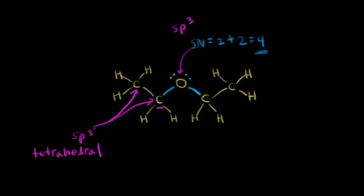Let's determine the geometry of this oxygen. There are four electron groups around that oxygen, each in an sp3 hybridized orbital. The electron group geometry might be tetrahedral, but the molecular geometry around the oxygen — if you ignore the lone pairs — is bent or angular. So even though the oxygen is sp3 hybridized, its geometry is bent. By symmetry, the other two carbons in the molecule are also sp3 hybridized.